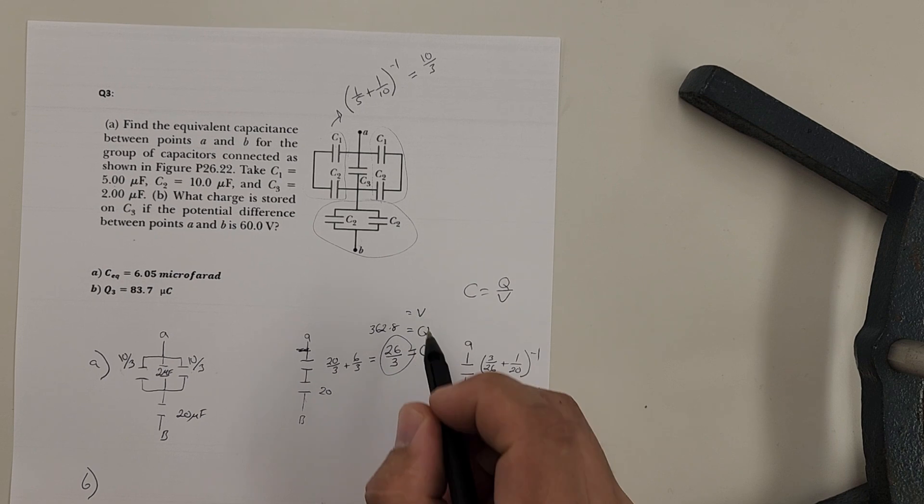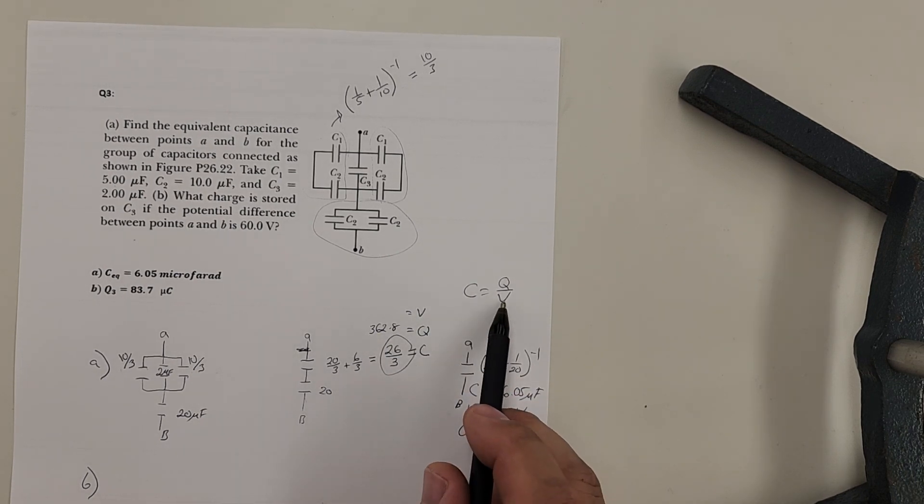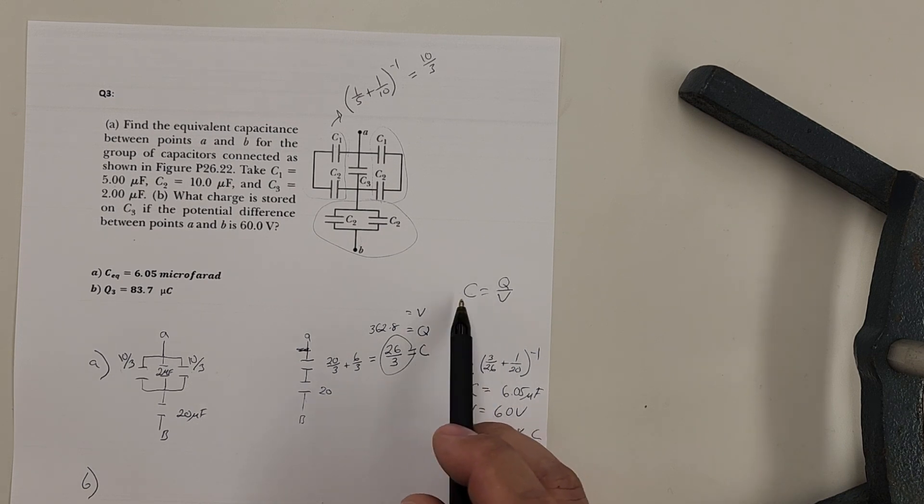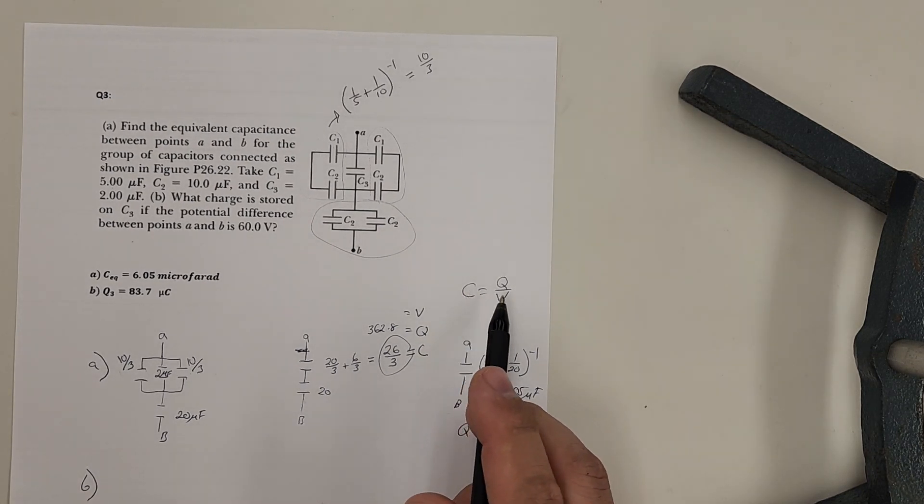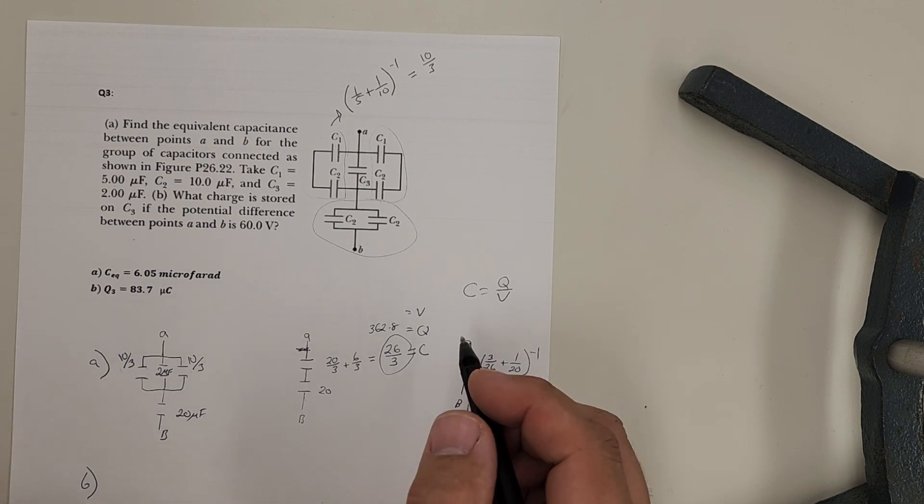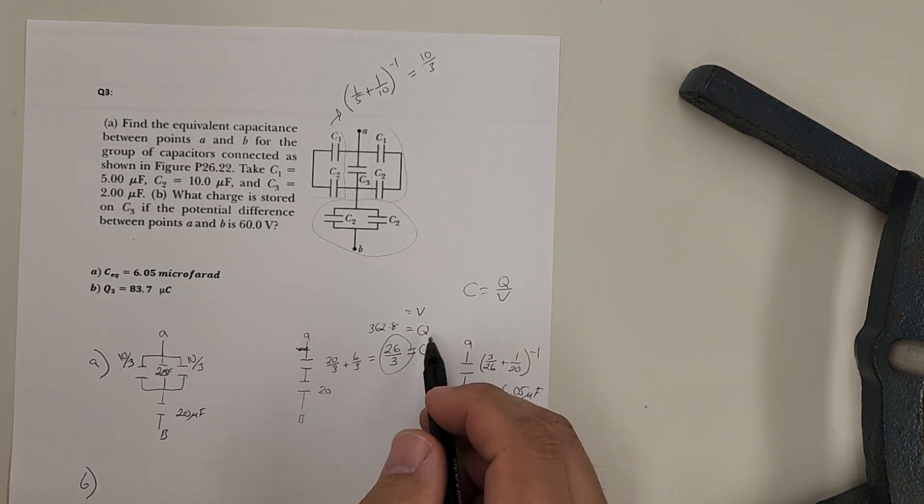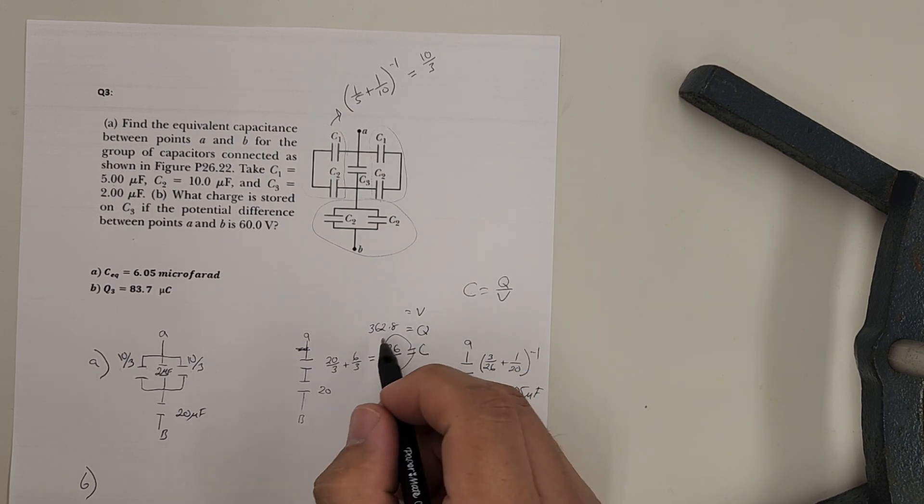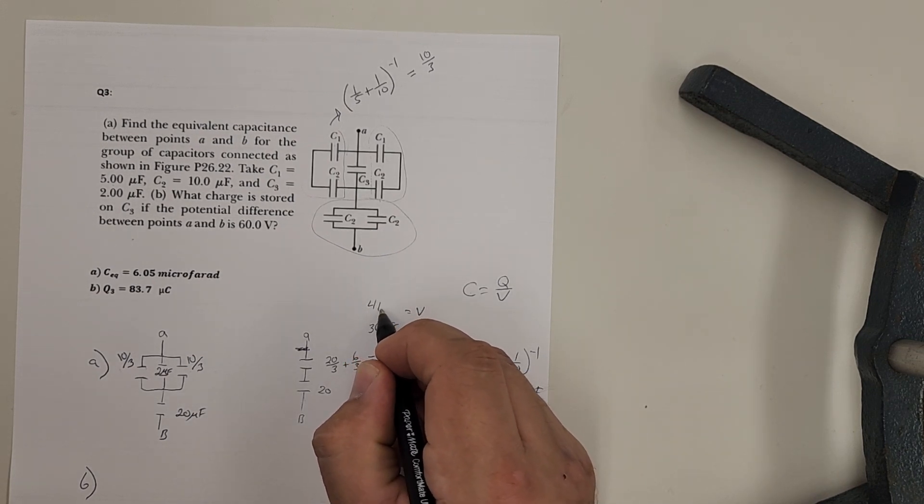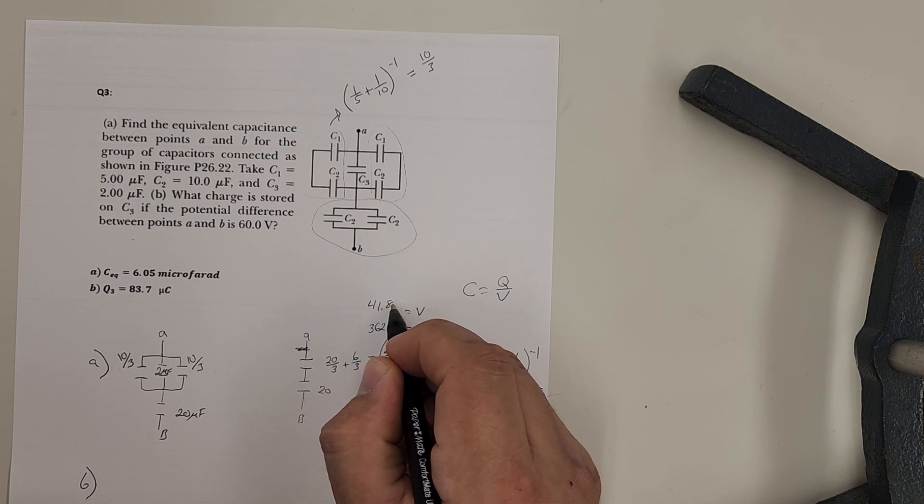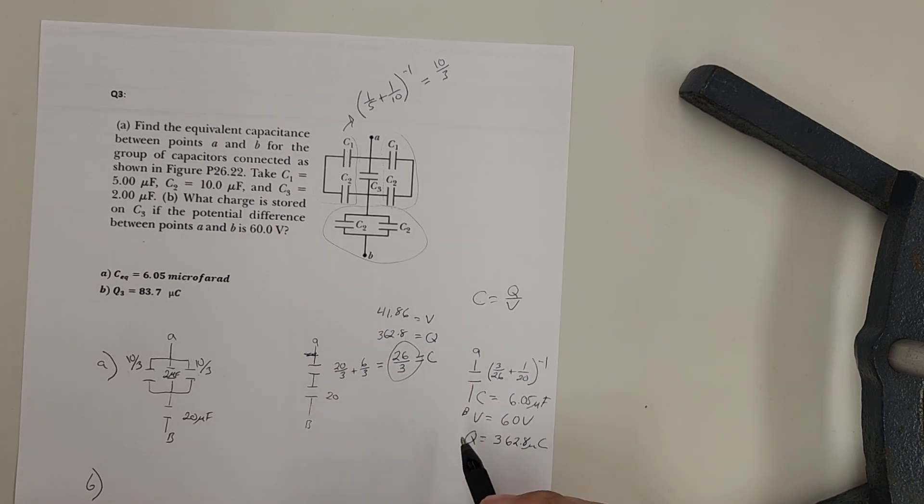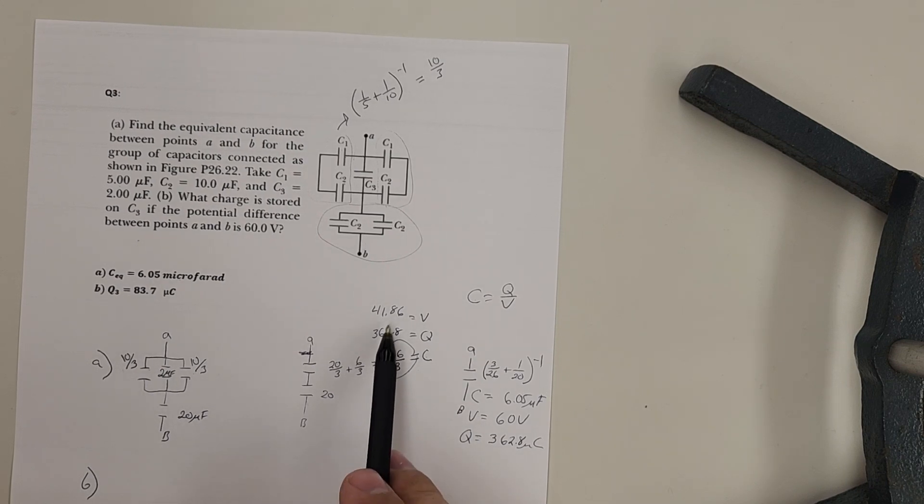Now the only thing I have left to find on this is voltage. So if I bring voltage over I have to bring capacitance back. Voltage will be Q over C. Okay. So voltage on that is going to be the Q divided by C. We'll end up getting a term of 41.86 volts. Okay. 41.86 volts should be in the calculator.